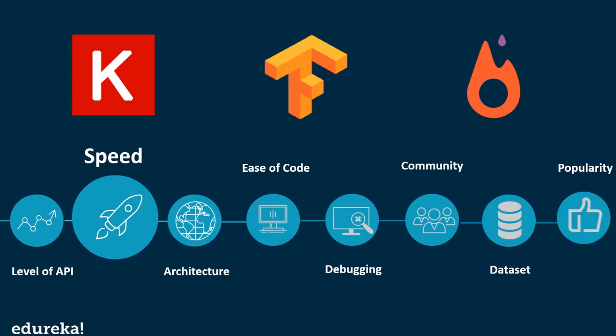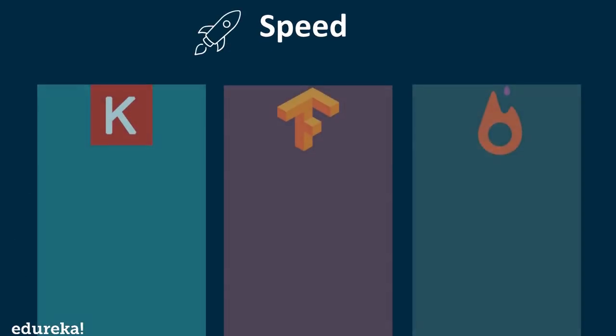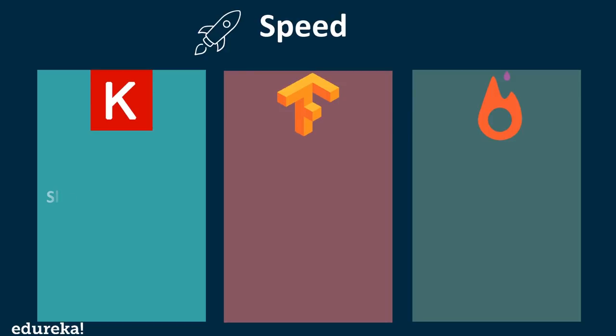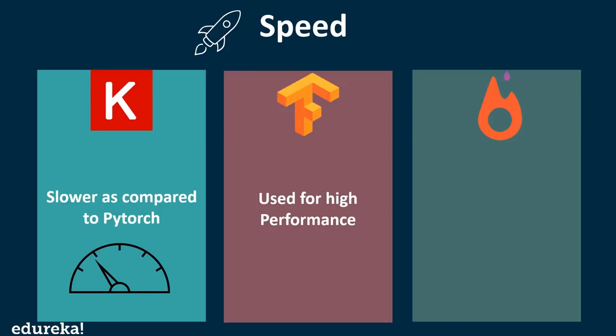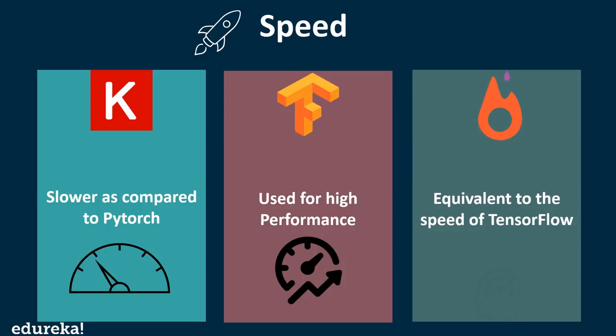The next parameter is speed. Speed is comparatively slower in the case of Keras, whereas TensorFlow and PyTorch provide a similar pace suitable for high performance. However, gains in computational efficiency of higher performing frameworks will be outweighed by the fast development environment and ease of experimentation that Keras offers.